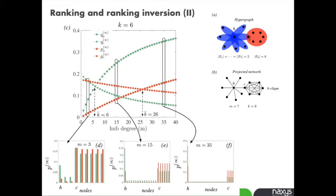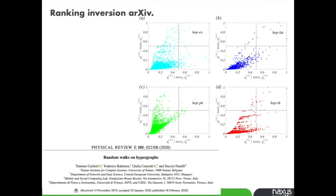If this simple network represented a co-authorship network, this means that if you rank authors using the hypergraph or the projected network, you will have a ranking inversion. Someone who is first in one case might not be the same in the other projection. This depends on the number of papers they wrote, but also on the size of the co-authorship groups.